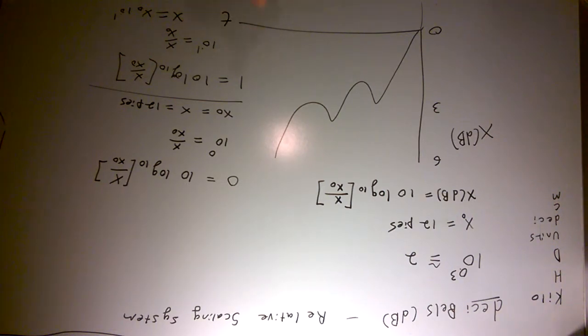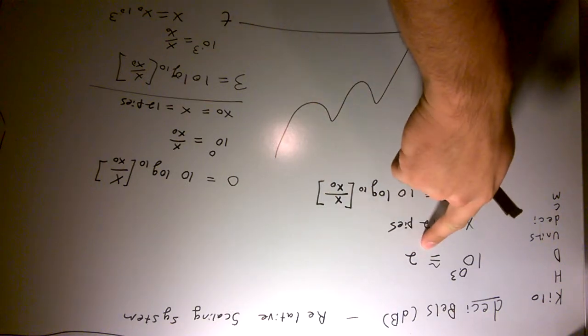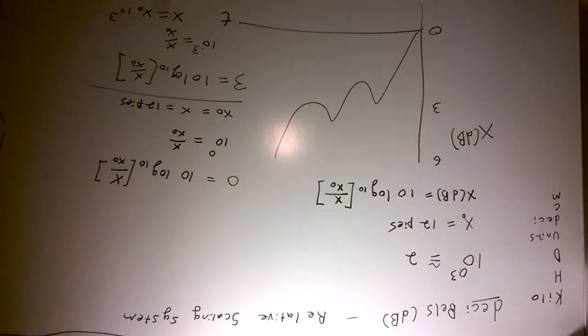But if we had evaluated this at say three, we can just change that to three. We know that ten to the point three is roughly equal to two, so our number of pies over here at whatever this t value corresponds to - three decibels - we have two times as many pies. That's basically just how the decibel system works.